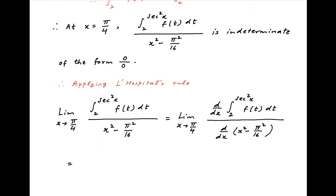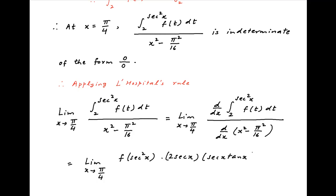This equals the limit as x tends to π/4. The derivative of the numerator equals the integrand with t replaced by the upper limit sec²x, multiplied by the derivative of the upper limit sec²x — which equals 2·sec(x)·sec(x)·tan(x) — divided by the derivative of the denominator, which is 2x.